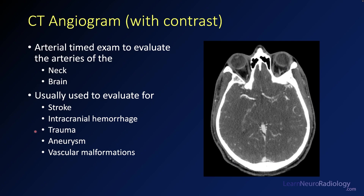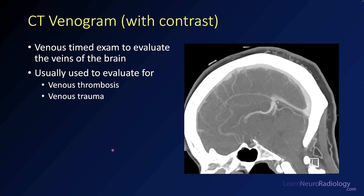We sometimes do CT angiograms in trauma to evaluate for traumatic vessel injuries, and to look for aneurysms or vascular malformations. A CT venogram is very similar to a CT angiogram, only the timing is a little bit later, so you do it to see the veins of the brain. It's usually used to evaluate for venous thrombosis or venous trauma. Here you can see a sagittal image showing the superior sagittal sinus filled with contrast — waiting a little bit longer after a CT angiogram gives you a CT venogram.